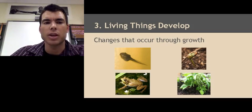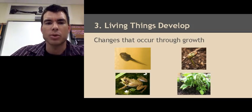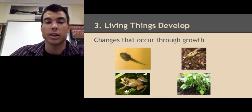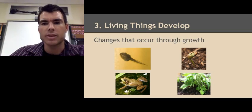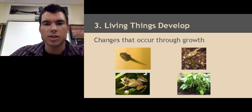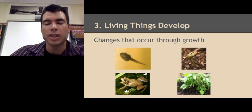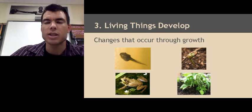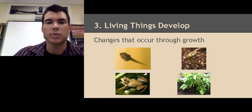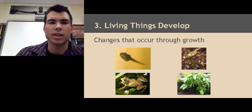There are two examples of development here. The example on the left is a tadpole — as a tadpole grows, it eventually turns into a frog, looking nothing like it did as a young tadpole. The example on the right is a bean plant: when you take a bean seed and plant it, as it grows it develops a longer stem, leaves, and everything that comes with that. That is development in living things.